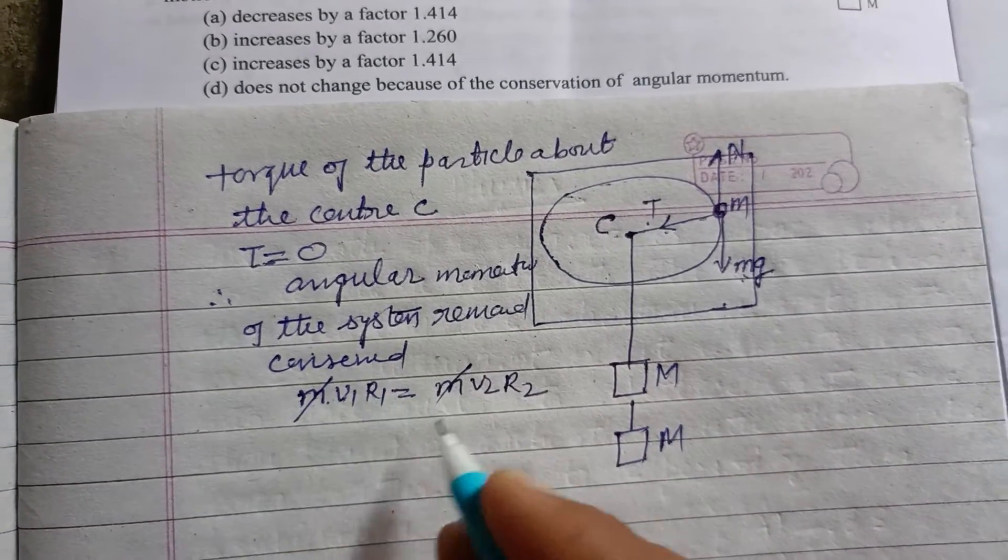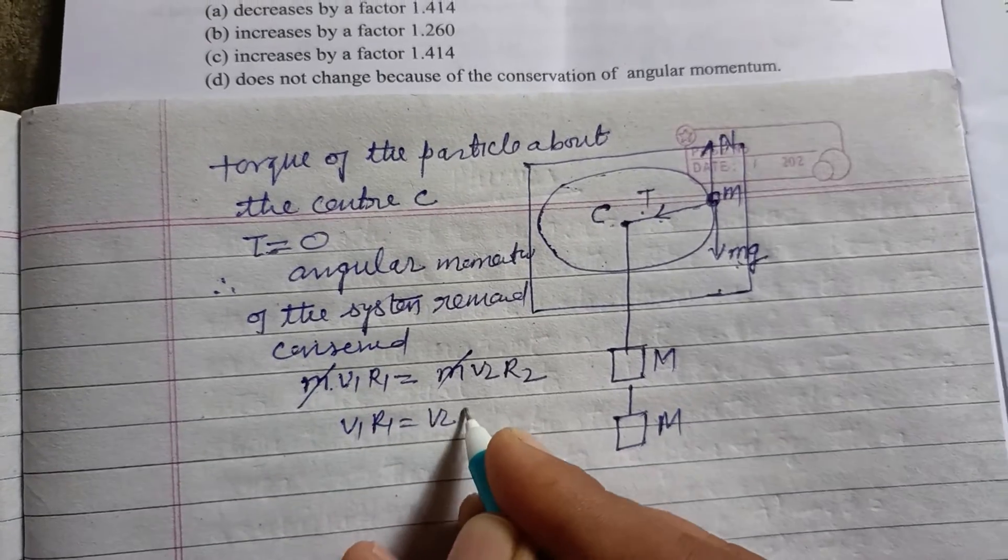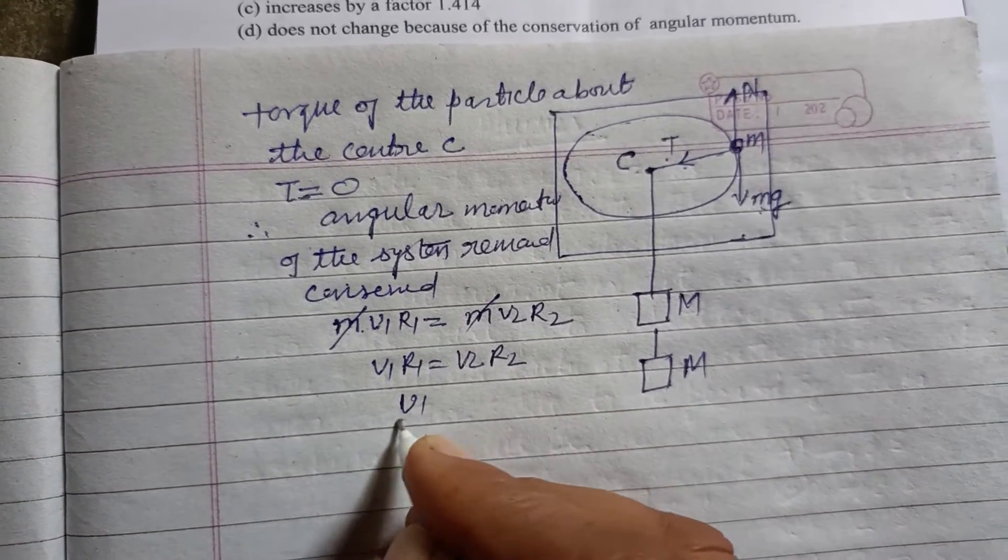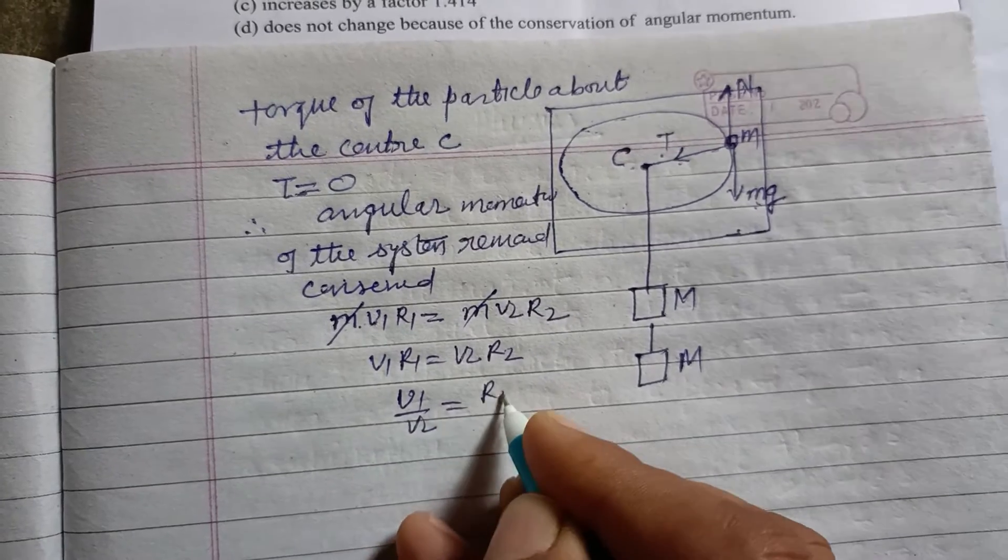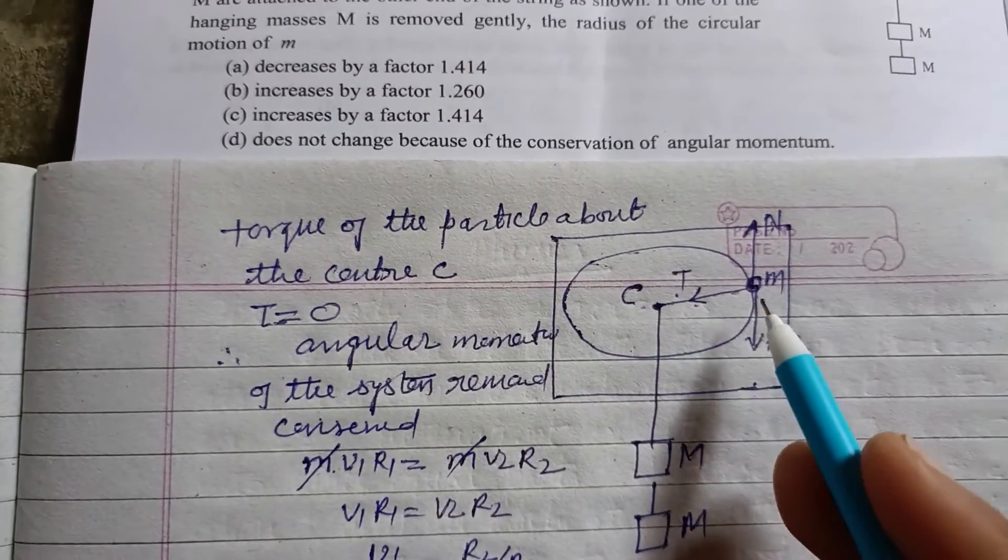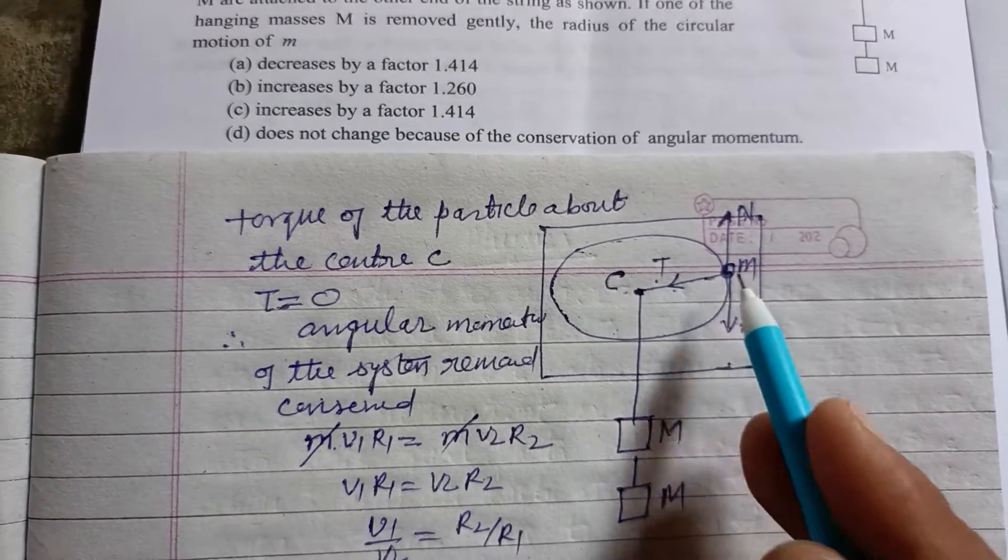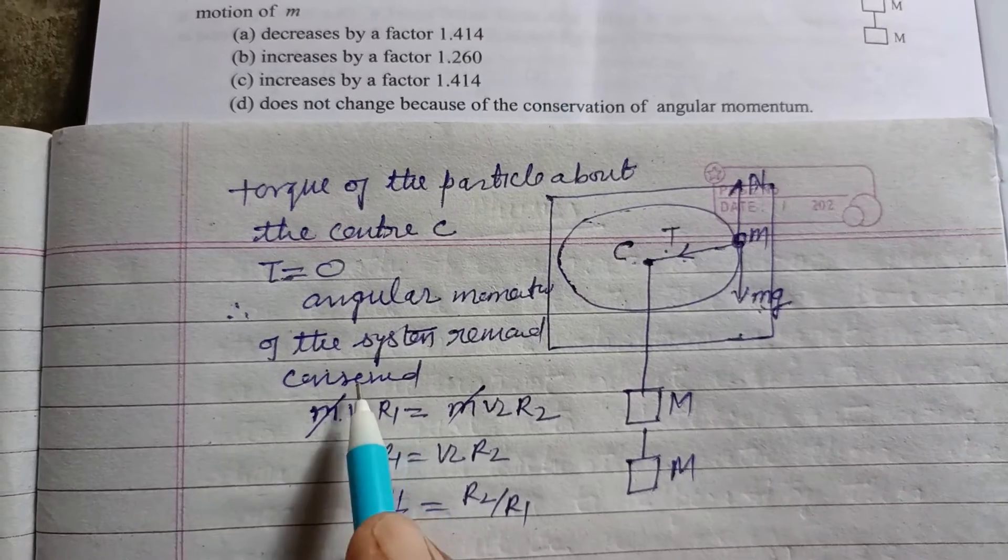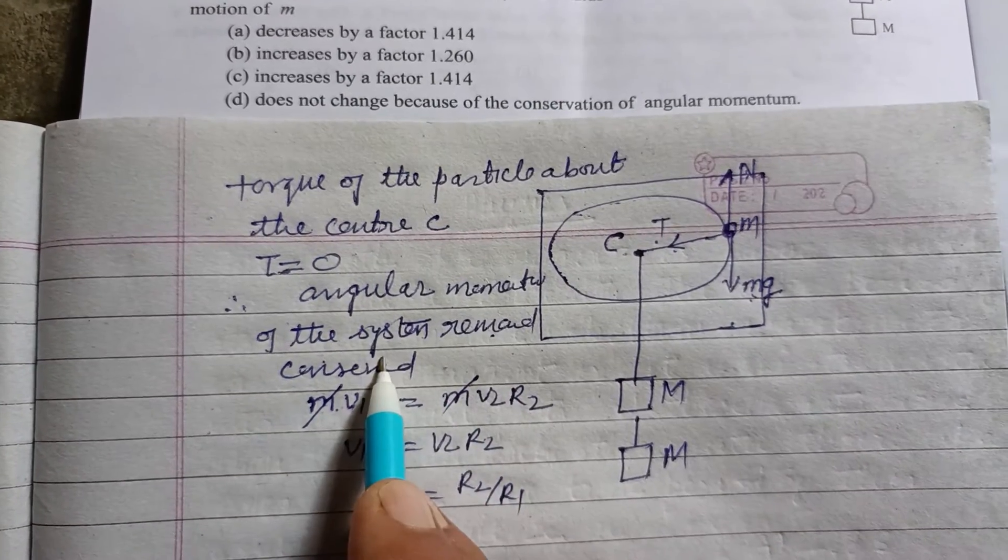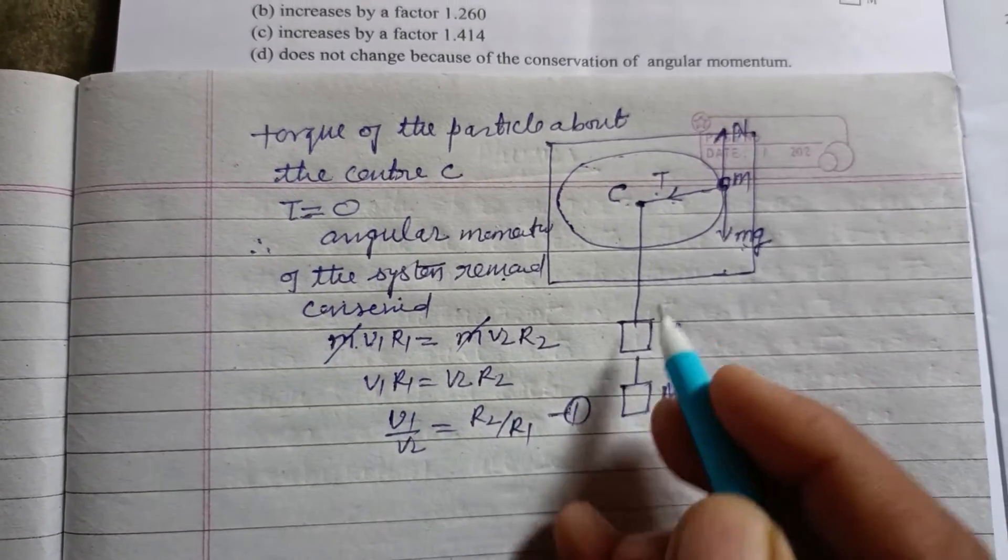M cancels, we got V1R1 equal to V2R2. So V1 upon V2 equals R2 over R1. Since no external torque is acting on the particle M, so its angular momentum remains conserved. This is our first equation.